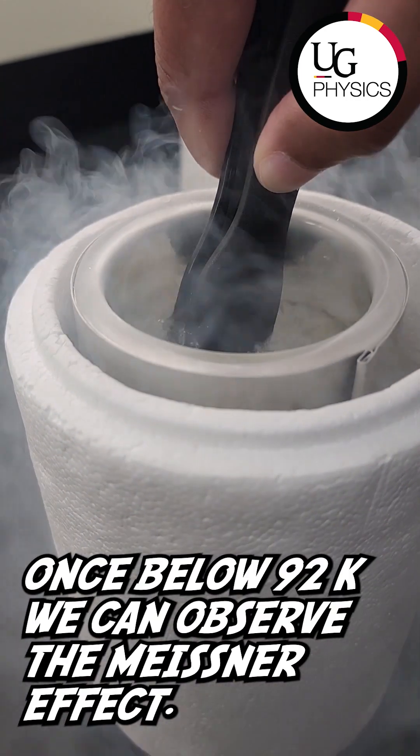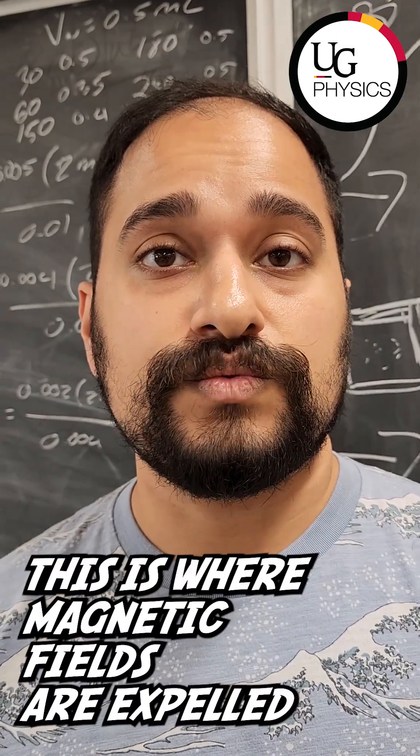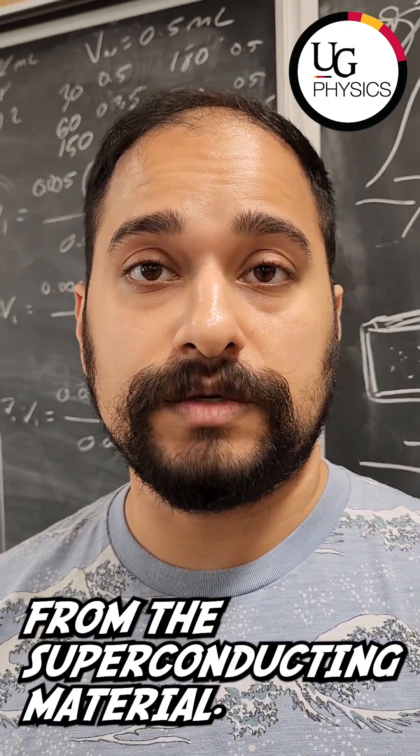Once below 92K, we can observe the Meissner effect. This is where magnetic fields are expelled from the superconducting material.